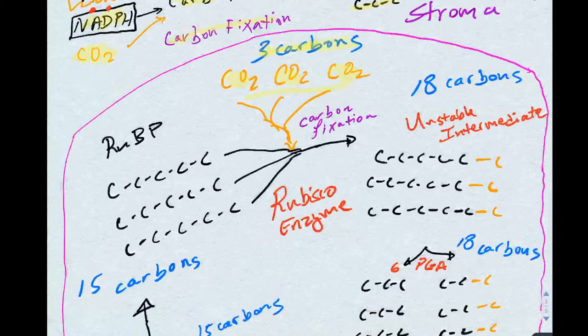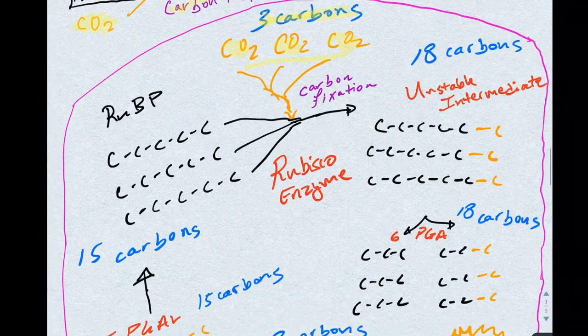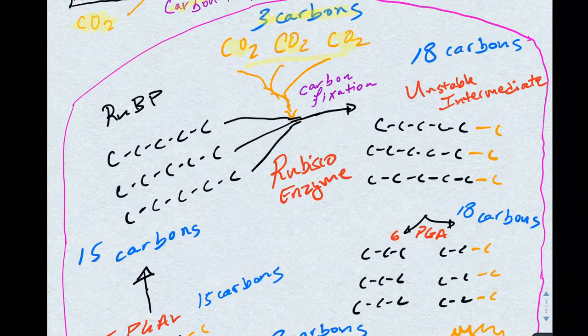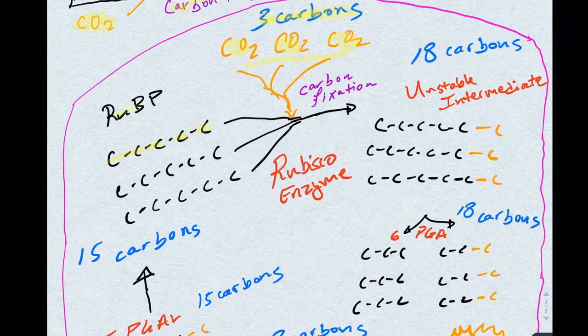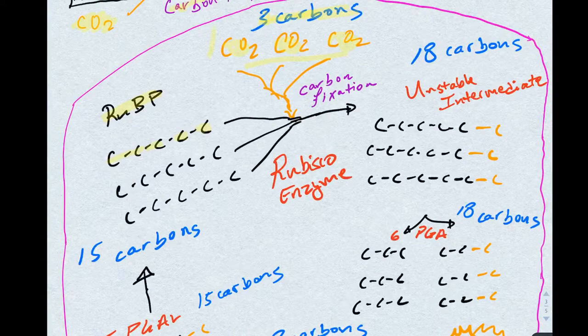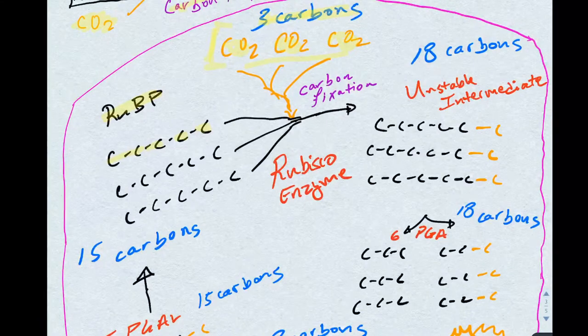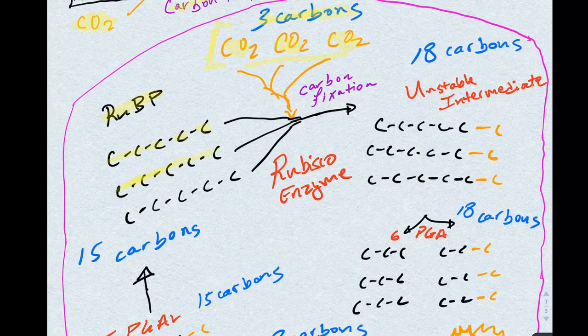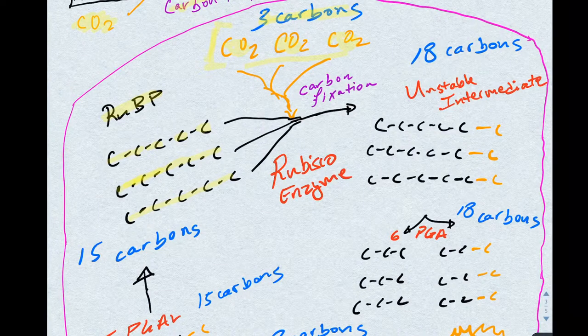This is taking place in the part of the chloroplast known as the stroma. Within the stroma, there are molecules that have five carbons on them, and these molecules are called RU-BPs. Since we are following three carbon dioxides, we will use three RU-BPs in order to fixate the three carbon dioxides.